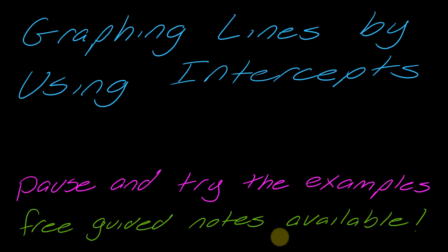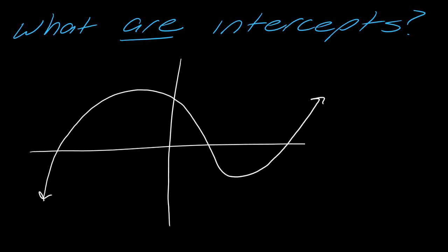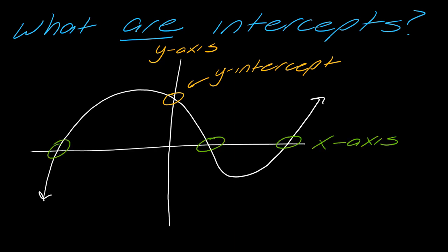In this video, we're going to talk about how to graph lines by just using the intercepts. That probably leads to the most obvious question: what are intercepts? You can take any line — I just drew something at random here. At the y-axis, this is where the graph has crossed. Where the graph crosses the y-axis, that's what's known as the y-intercept. And here at our x-axis, where the graph is crossing, those are appropriately called the x-intercepts.